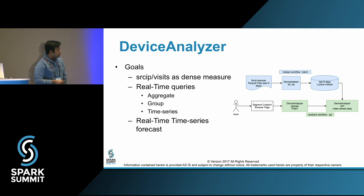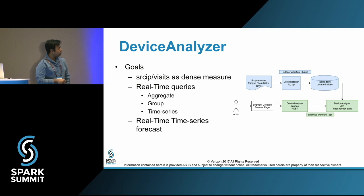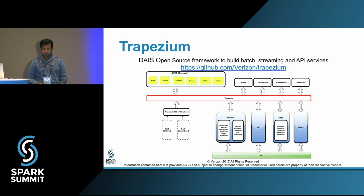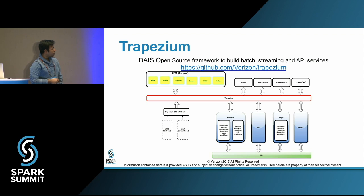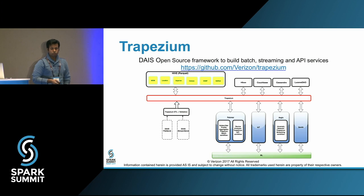Then we have an analytics workflow that is an API flow. From the segment creation browser page, people can post the queries they want, and this whole flow has to return back the output within a few seconds. To support all this — building the batch, streaming, and API workflows — we introduced the Trapezium project, which is available on GitHub. The project has a few components: the first is data storage, focused on the Lucene DAO, and you can also use Parquet formats. Trapezium becomes a central controller for the whole flow, and there is also an ML component.